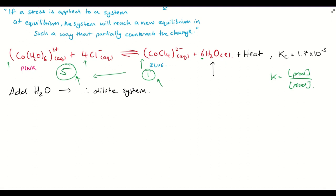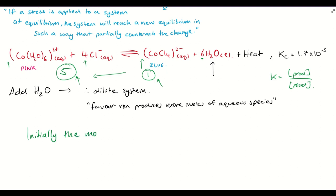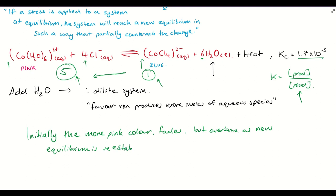So if we add H₂O, therefore we dilute the system, we favour the reaction that produces more moles of aqueous species. What happens to the colour change? Well, initially just by diluting it, the more pink colour fades. But we see that we're favouring the reverse reaction here, so initially the more pink colour fades, but over time as a new equilibrium is re-established, a stronger pink colour forms.